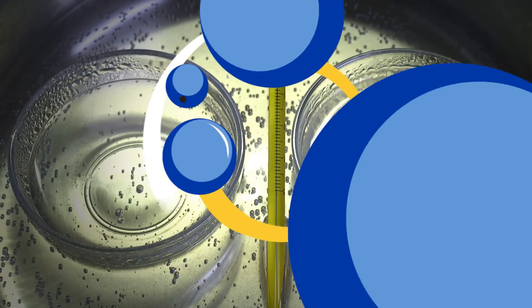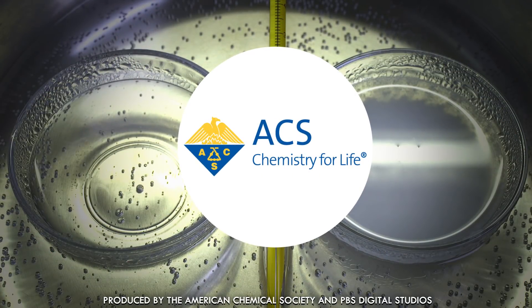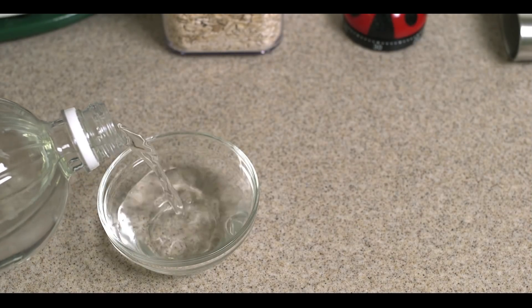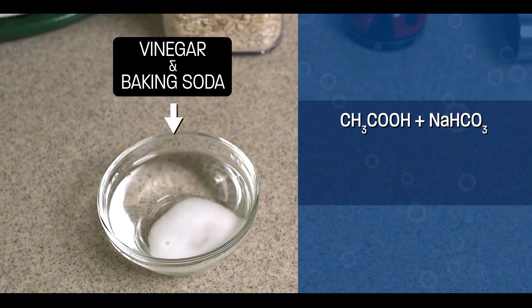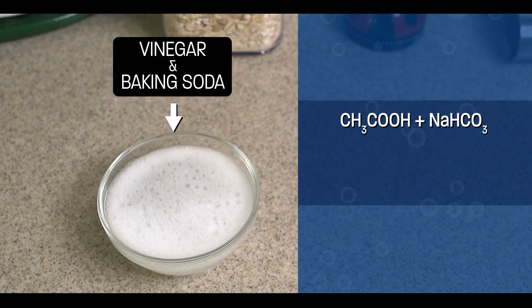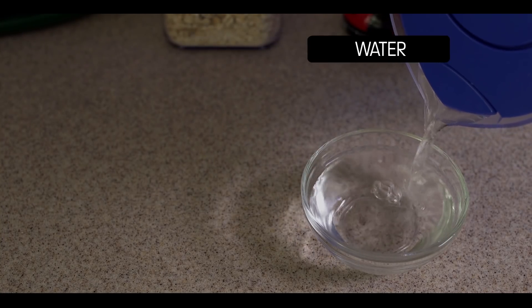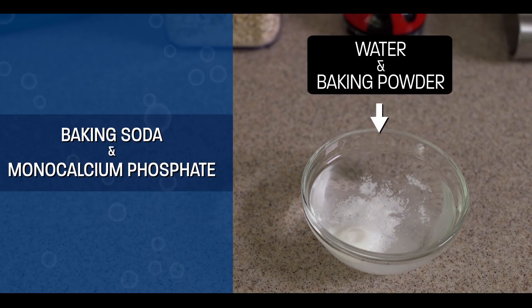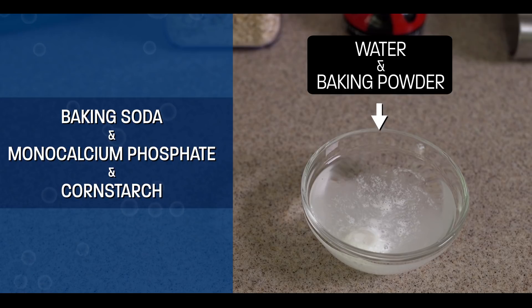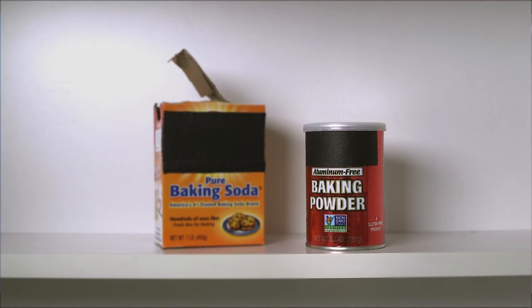Wait — where are these extra bubbles coming from? You've probably guessed that the liquid in this bowl was vinegar and the white powder was baking soda, so you also know the bubbles are carbon dioxide. In this bowl, the clear liquid was just plain old water and the powder was a mixture of baking soda, monocalcium phosphate, and cornstarch — you know this mixture as double-acting baking powder, and it's quite different from baking soda.